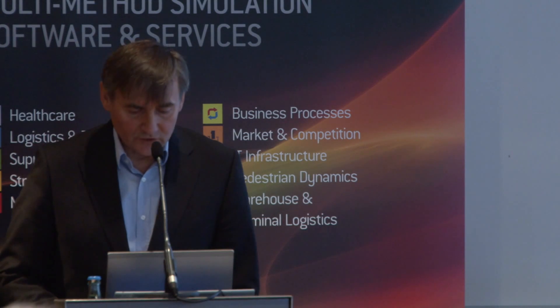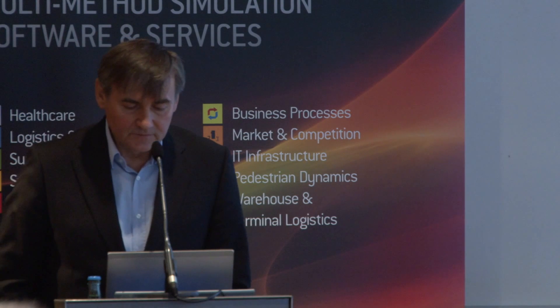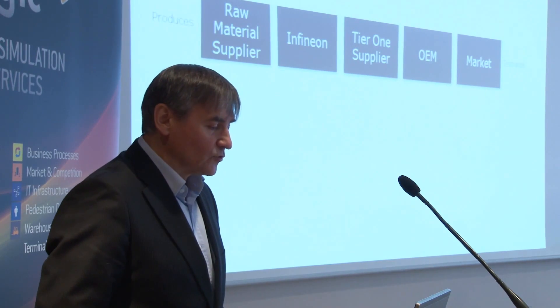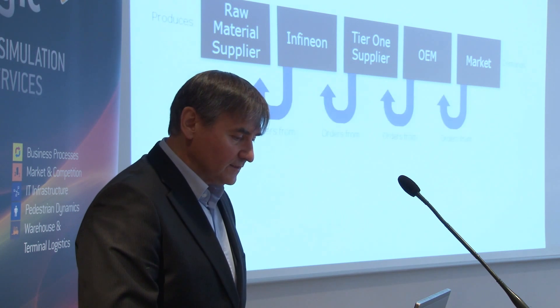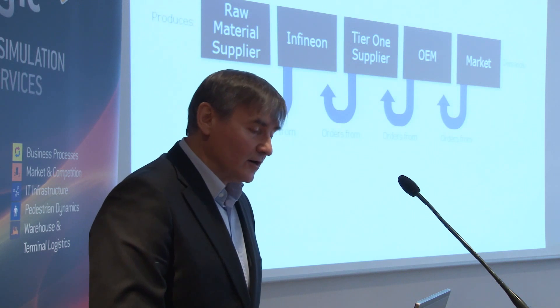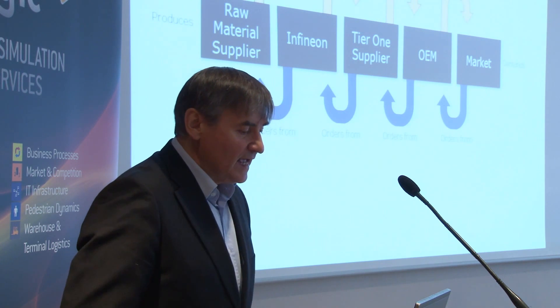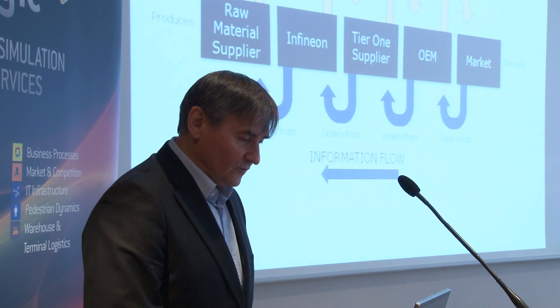Now let me come to the model description. A very simplified supply chain showing the raw material supplier, Infineon, tier one supplier, OEM, and the market. We have orders coming from the market to the OEM, to tier one supplier, to Infineon, to the raw material supplier. And we have deliveries going the other way. So we have on one side the information flow and on the other side the material flow.